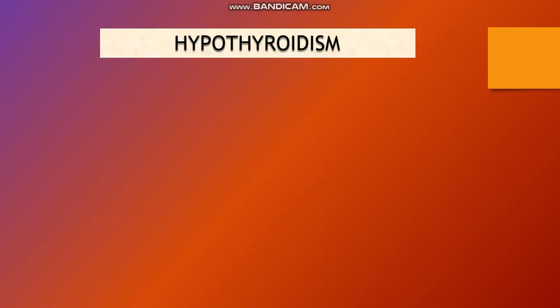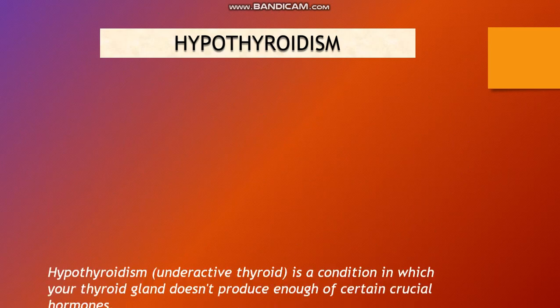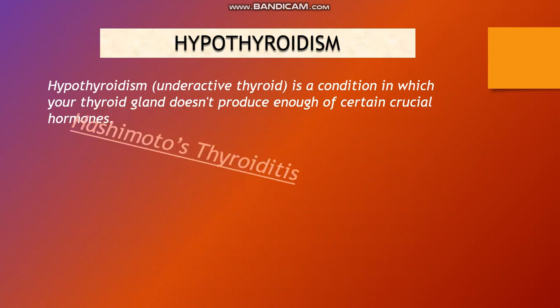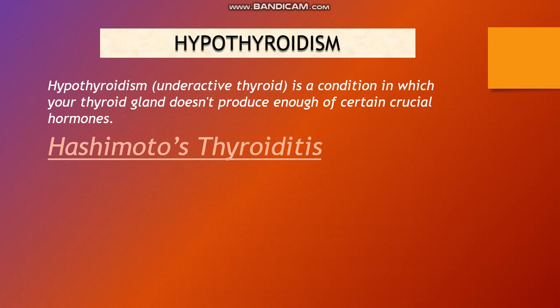We are discussing disorders of the thyroid gland. The disorder on the screen is hypothyroidism, the under-functioning of the thyroid gland. Hypothyroidism, or underactive thyroid, is a condition in which the thyroid gland does not produce enough of certain crucial hormones. One example is Hashimoto's thyroiditis.